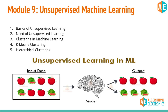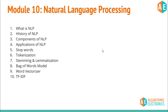Module 9 covers unsupervised machine learning, which is quite different from supervised learning. Here the dataset is not labeled — for example, apples and watermelons are mixed without labels. The algorithm's job is to form clusters: cluster one could be labeled apple, cluster two as watermelon. We will discuss various clustering algorithms in detail in module nine.